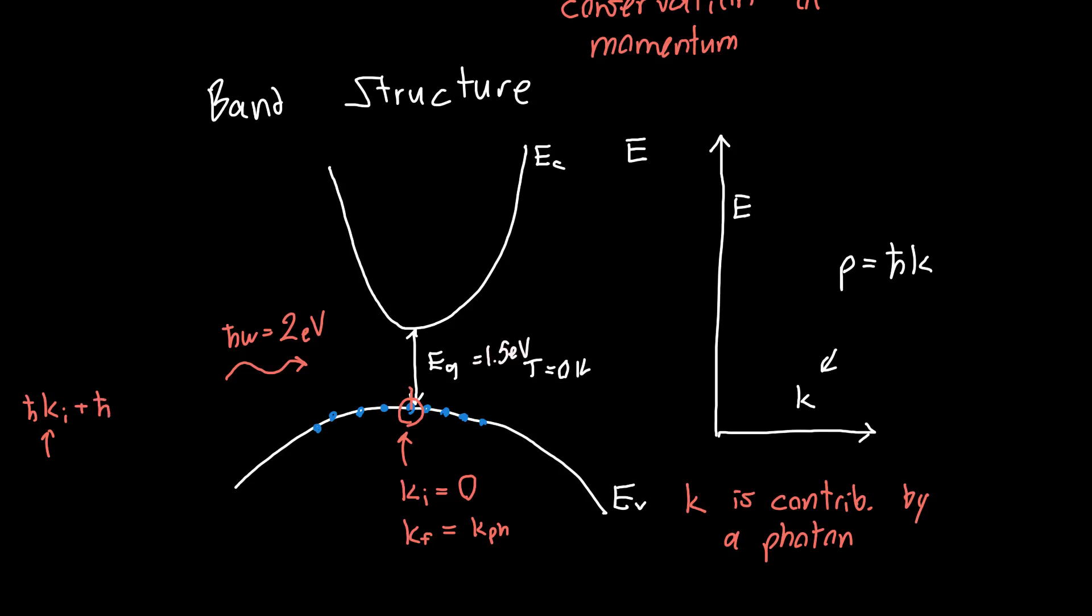If we really want to talk about momentum, let's multiply everything by h-bar. So h-bar ki plus h-bar of the k of the photon should equal our final momentum. And here we said for example that k initial was zero, so our final momentum should just equal our photon momentum.